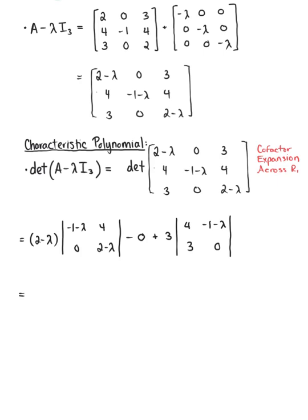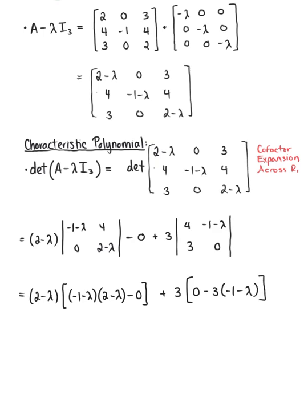Computing these 2 by 2 determinants, we have (2-lambda) multiplied by ((-1-lambda)(2-lambda) minus 0), plus 3 multiplied by (0 minus 3(-1-lambda)). Simplifying, we can factor out the negative from the binomial -1-lambda and rewrite this as (-1+lambda)(2-lambda) squared, and then our second term becomes plus 9 multiplied by (1+lambda).